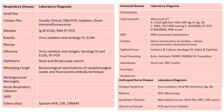Laboratory diagnosis: smallpox — clinical, DNA PCR, isolation, direct immunofluorescence. Measles — IgM ELISA, RNA RT-PCR. Rubella — virus isolation, serology, hemagglutination inhibition, ELISA. Influenza — virus isolation, antigen, serology ELISA, and RT-PCR. Diphtheria — nose and throat swab culture. Whooping cough — bacteriological examination of nasopharyngeal swabs and fluorescent antibody technique.